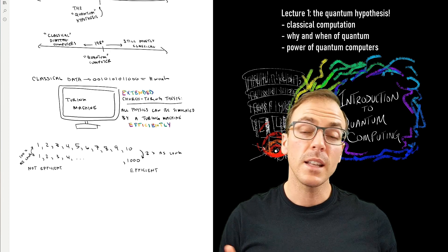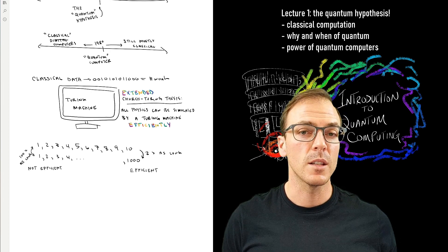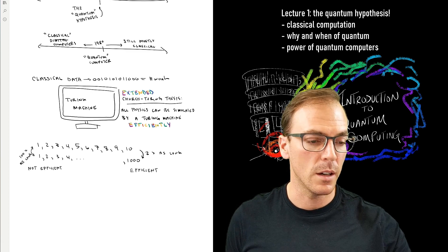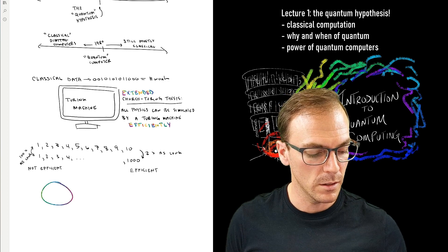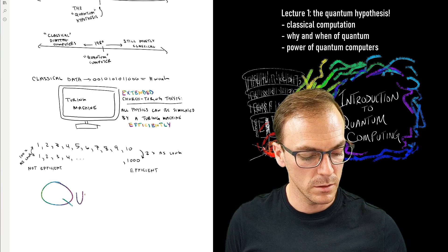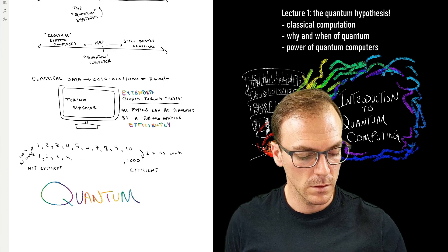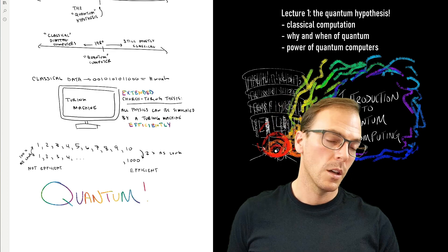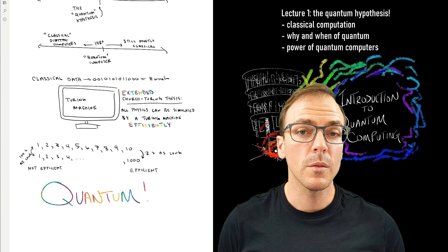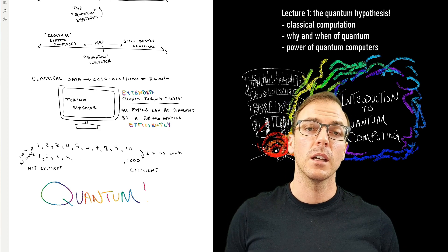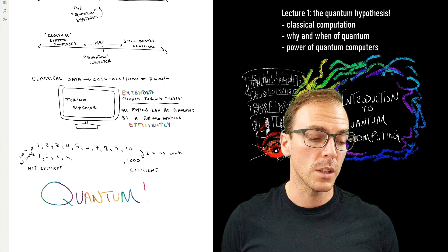Now, the Extended Church-Turing thesis is probably wrong. It's probably incorrect. And that's all because of, let's go back to the fancy one, quantum. So quantum physics, as far as we can tell, cannot be simulated efficiently on a digital computer using a Turing machine. So a Turing machine probably can't simulate the quantum mechanical universe efficiently.